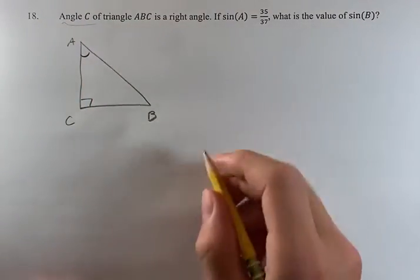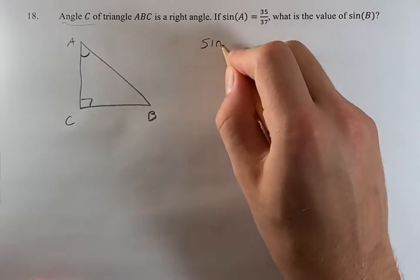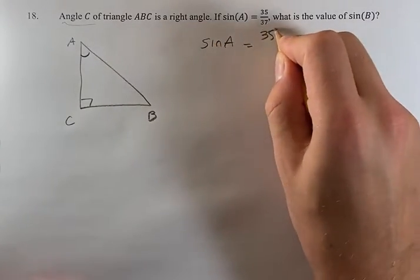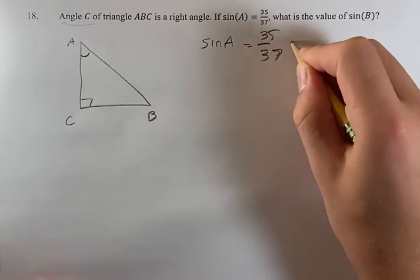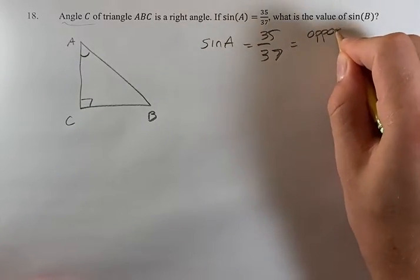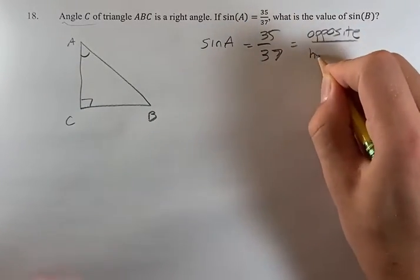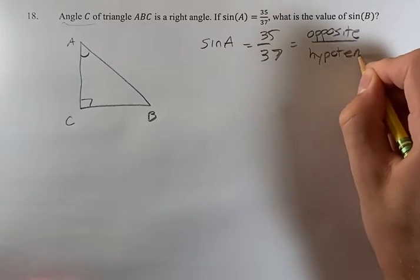We know that sine of A is 35 over 37. What does that mean? That means the opposite side divided by the hypotenuse is equal to 35 over 37.